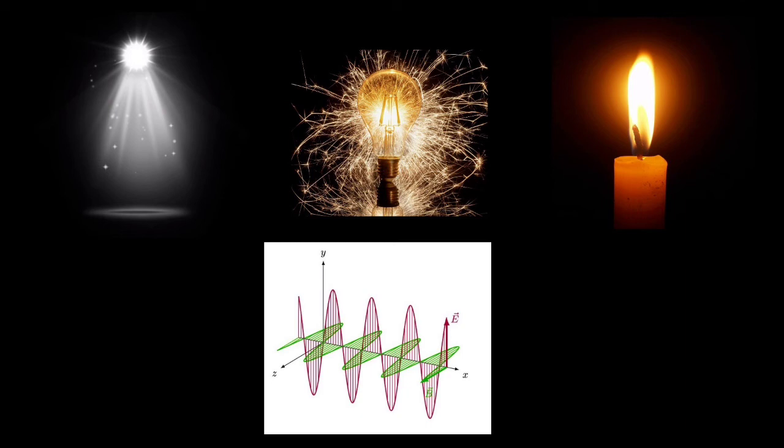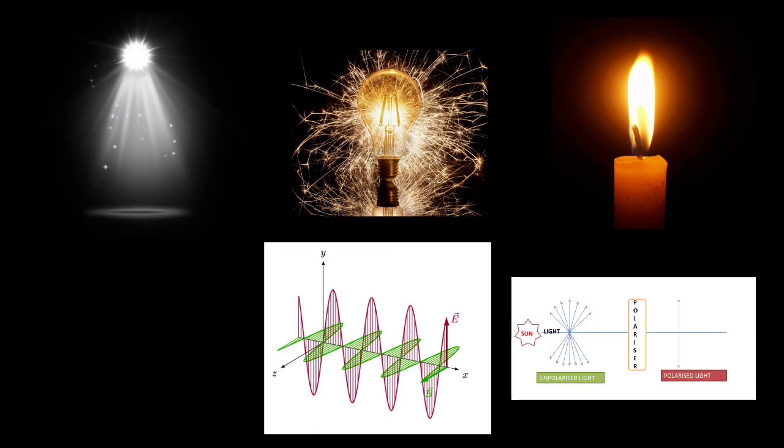That means the light which emerges out of the polaroid filters has only vibration in one plane. That is, it may be vibrating in vertical or horizontal planes. So such light is called as plane polarized light.